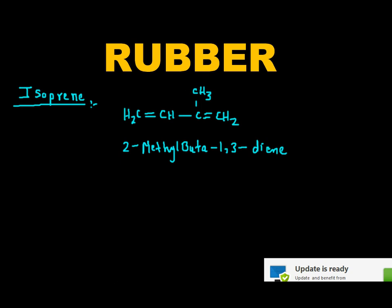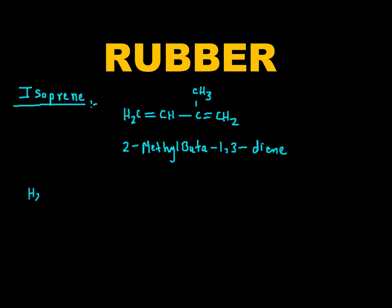It undergoes polymerization process and results in the formation of rubber. We will see the reaction also, how the reaction proceeds actually. So let's see. So here we will write CH2 double bond CH, and this will undergo polymerization.